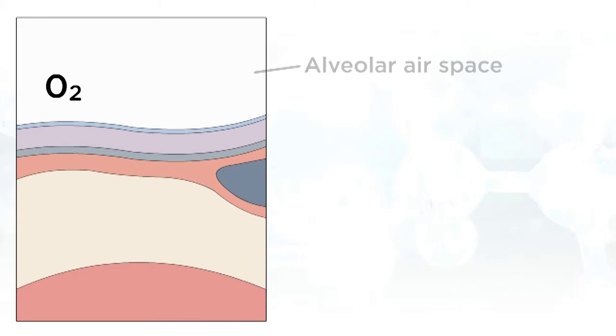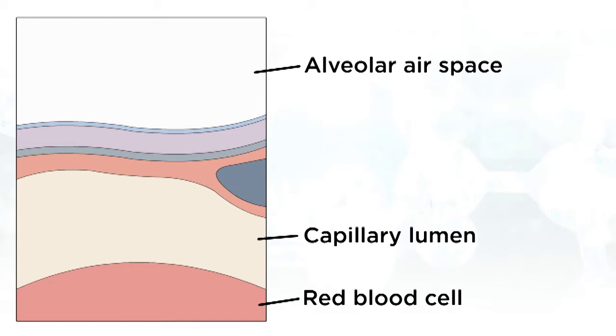As you can see, oxygen moves from the alveolar airspace into a pulmonary capillary and then into a red blood cell, which is what is used to carry oxygen within our blood. At the same time, carbon dioxide moves out of the red blood cell through the pulmonary capillary and into the alveolar airspace. When we exhale, the CO2 moves up the respiratory tract and out of our mouths into the surrounding atmosphere.